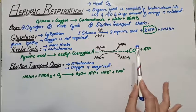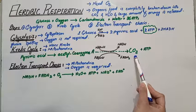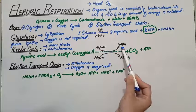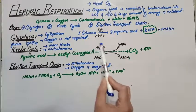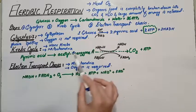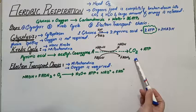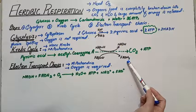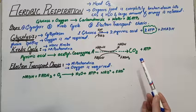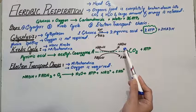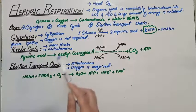Once pyruvic acid is converted into acetyl coenzyme A, it passes through a series of reactions in which it is completely oxidized. The end products are: carbon dioxide gas, which is exhaled; ATP molecules; and NADH and FADH2, because NAD and FAD present in the mitochondria accept hydrogen ions. So the products of the Krebs cycle are NADH, FADH2, carbon dioxide, and ATP. NAD stands for nicotinamide adenine dinucleotide, while FAD stands for flavin adenine dinucleotide.